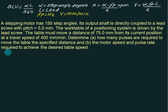We have given 150 step angles. So we have alpha equals 360 divided by 150. So alpha equals 2.4 degrees.